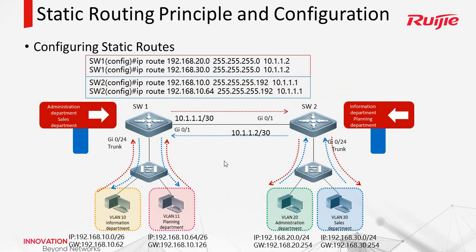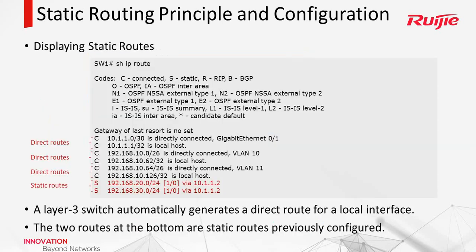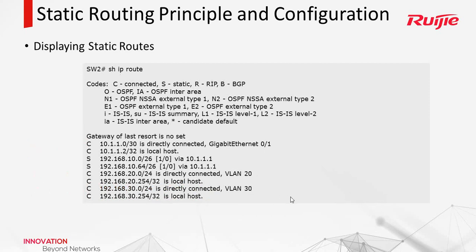Now we can have a review. For SW1 and SW2, they need to write the static route. For SW1, this is the destination. And for SW2, this is the destination. This is because SW1 is connected to this PC directly and also connected to SW2 directly, but it didn't connect to these PCs. So it needed the static routes, and the same applies to SW2. We can use show IP route to check the static routes. Direct routes are generated automatically; static routes are manually configured.